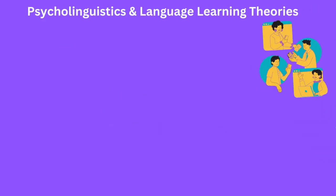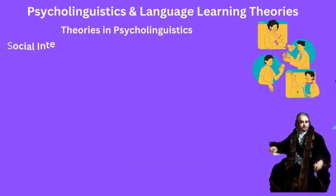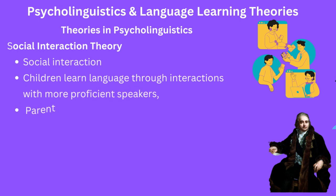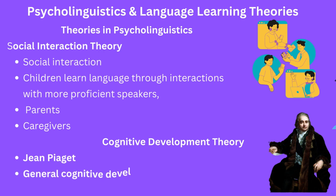Two further important theories are social interaction and cognitive development. The social interaction theory suggests that language acquisition is influenced by social interaction between the child and caregivers. Children learn language through a process of socialization in which they are exposed to language and learn to use it through interaction. This theory emphasizes the importance of the child's social environment, including the role of caregivers in providing language input and feedback.